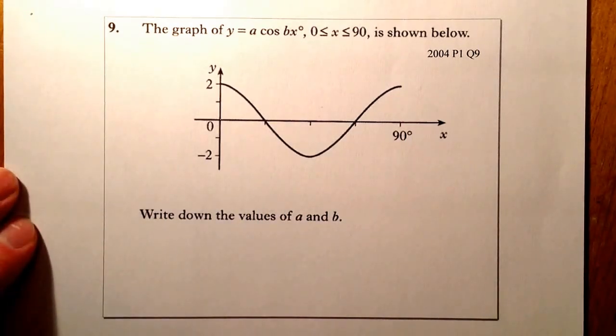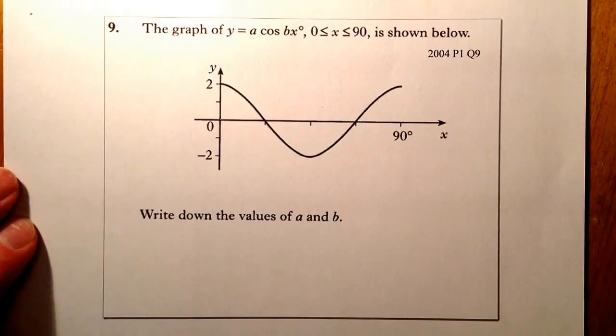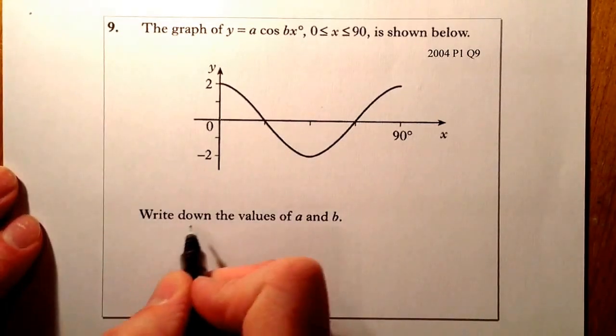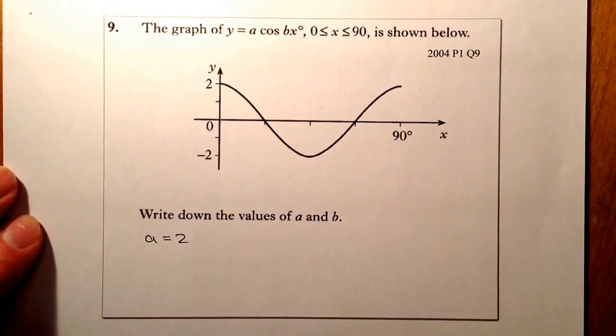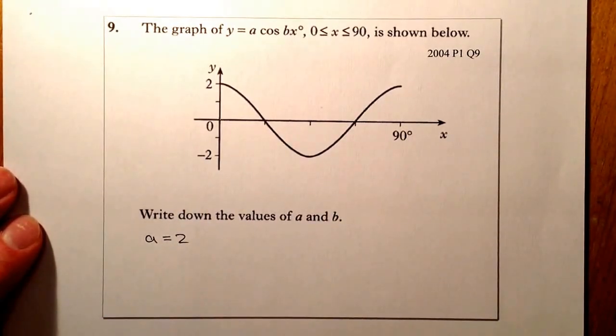Okay, so if I think about the normal sine curve that would be there, it would go up to 1 and down to minus 1. So these values have been multiplied by 2. So from there, straight away, I can see that a is going to be equal to 2. So a equals 2, just from that point there, I'm looking at the amplitude.